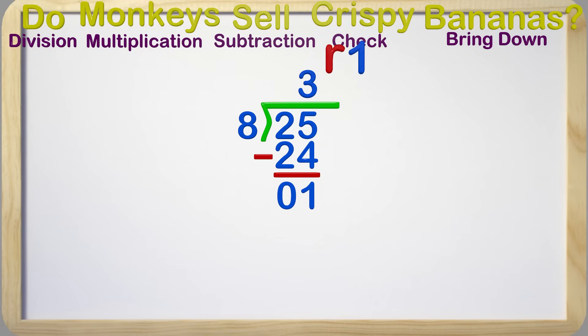We will take this number 1 and put it up here with our answer. The letter R means remainder, and the 1 is what was remaining after solving the problem. So the quotient, or answer, is 3 with a remainder of 1. We now know that 8 goes into 25 three times with a remainder of 1.